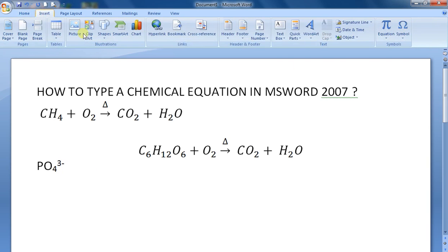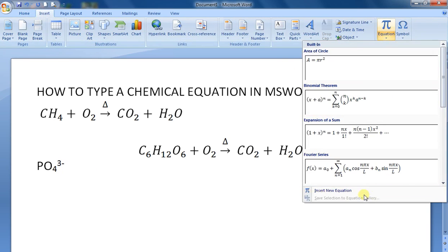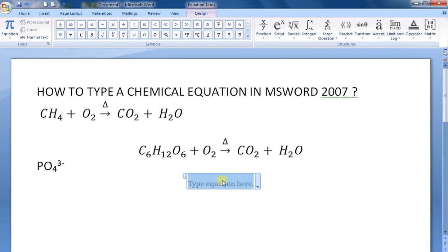So what we do is go to Insert Equation, insert new equation. Type NH underscore 4, then the caret symbol followed by plus. You get NH4+.